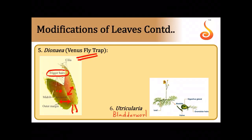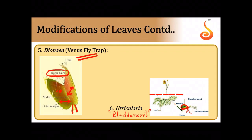Utricularia is called the bladderwort. Much of the plant is immersed in water and the leaves are modified into tiny bladder-like compartments. These bladders have a trap door with sensitive hairs or valves. When an insect enters, the valves open inwards but not outwards, trapping the insect inside. Inside the bladder, digestive glands secrete substances to digest the insect's body. The leaf is thus modified into tiny sac-like structures acting as traps.